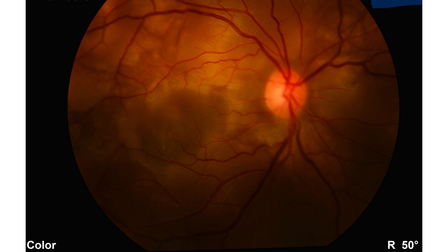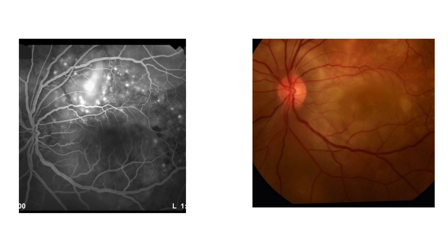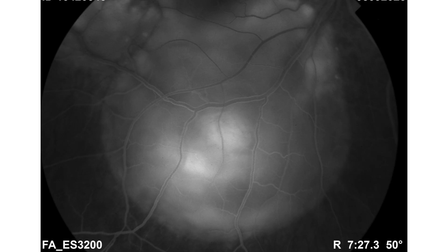We started our investigation and went for the FFA. In the FFA findings, you can see on the right side there is a fundus photograph, and on the left there are multifocal areas of pinpoint leakage — hyperfluorescent areas — corresponding to the right fundus photograph. This is another well-localized area where we can see central pooling of the dye with focal leakage areas.